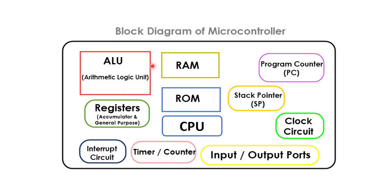Now, the block diagram of the microcontroller. As I have already mentioned, a microcontroller is a microprocessor with integrated peripherals, meaning it has CPU, ROM, RAM, arithmetic and logic unit, registers, interrupt circuit, timer, counter, input/output ports, clock circuit, stack pointer, and program counter — all functional blocks on a single chip, making it a complete system performing a specific task according to the application.